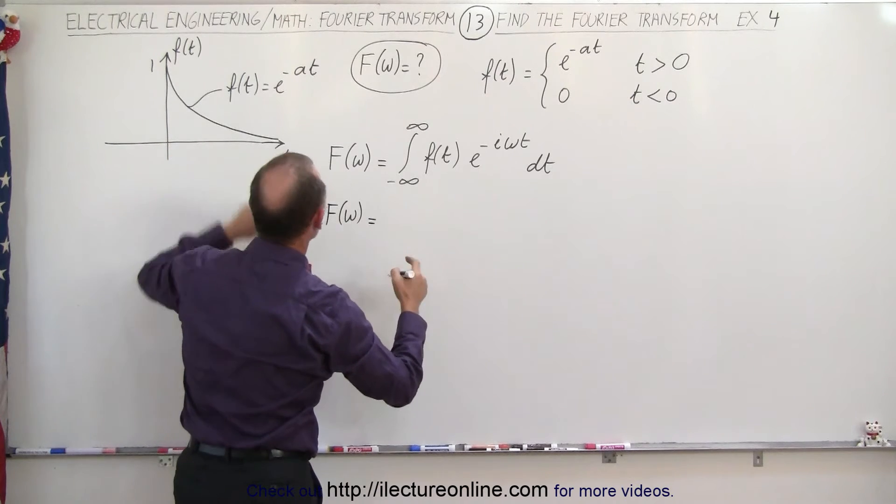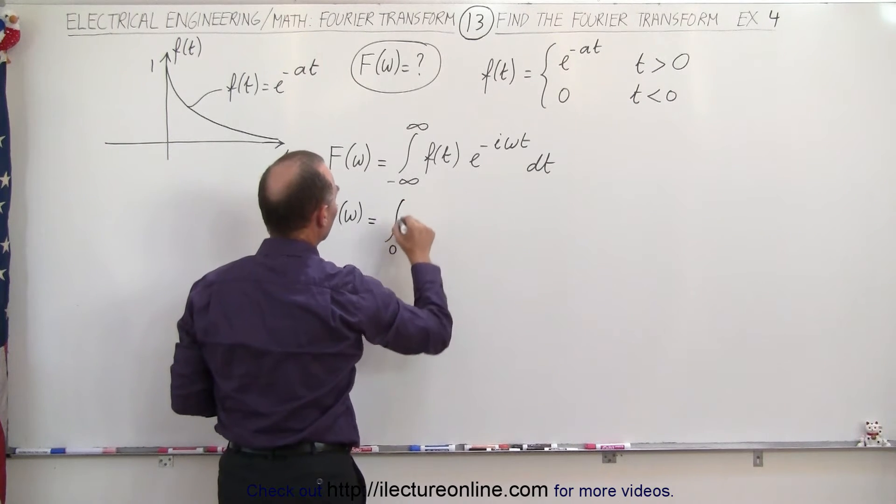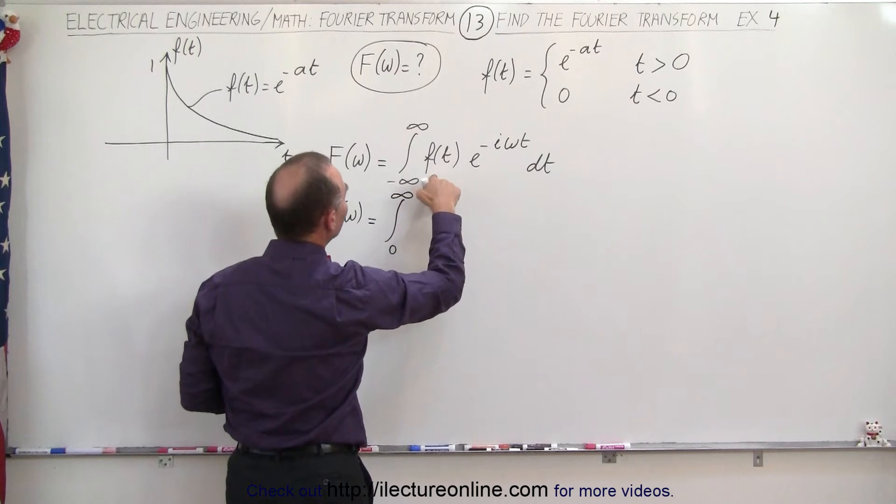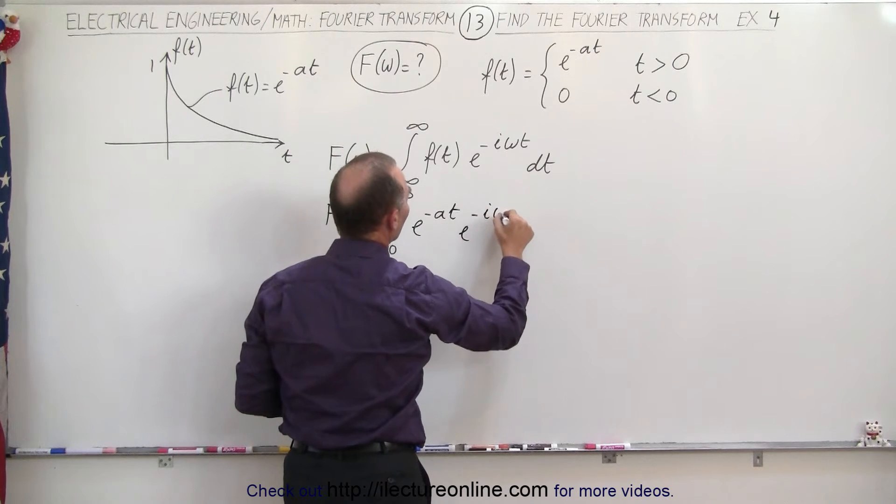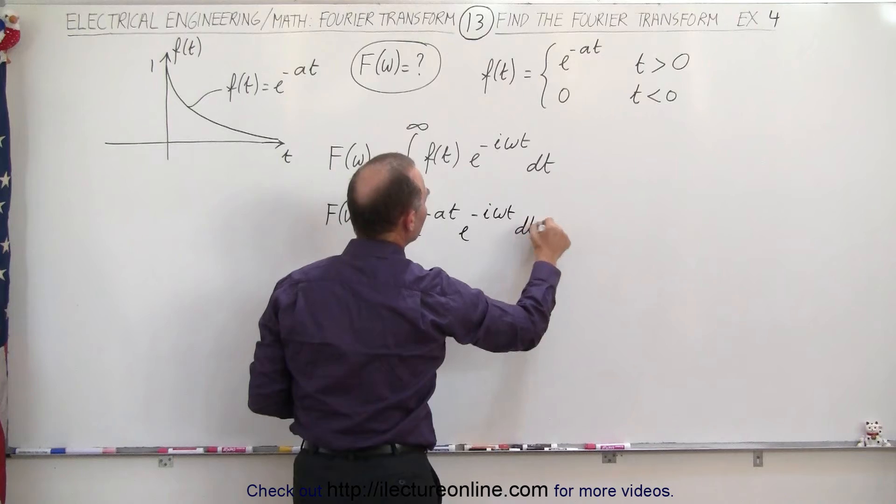are going to go from zero to positive infinity, from zero to infinity. f of t is going to be e to the minus at, where a is simply a constant, times e to the minus i omega t times dt.